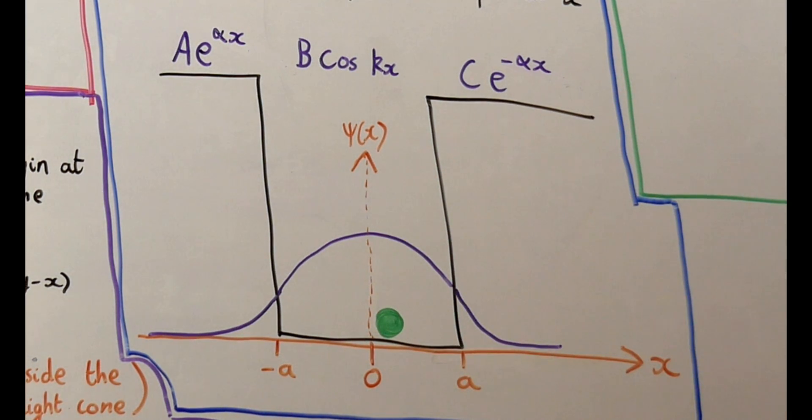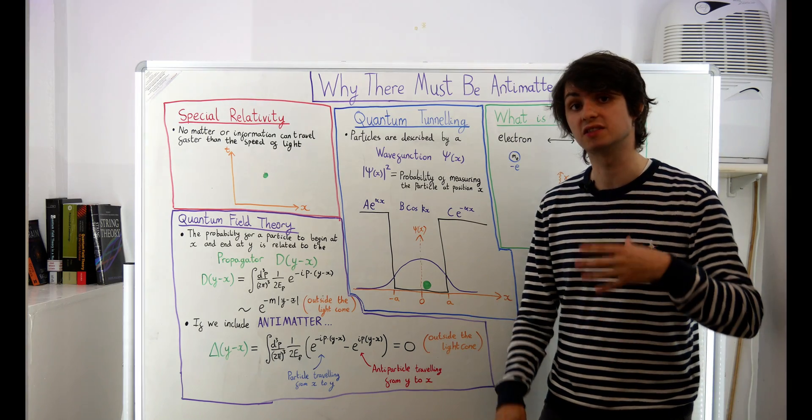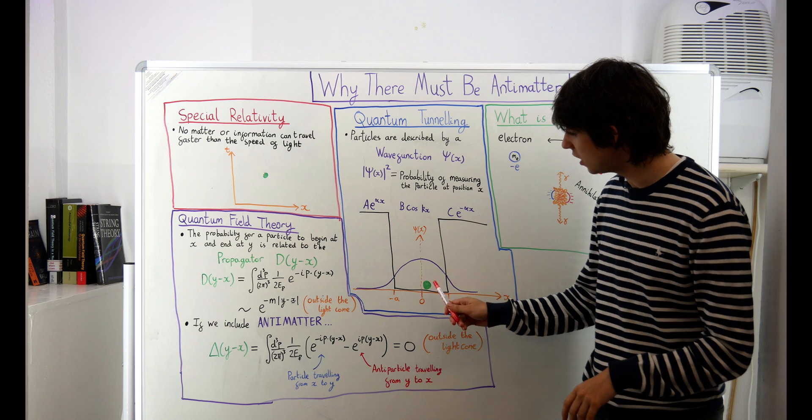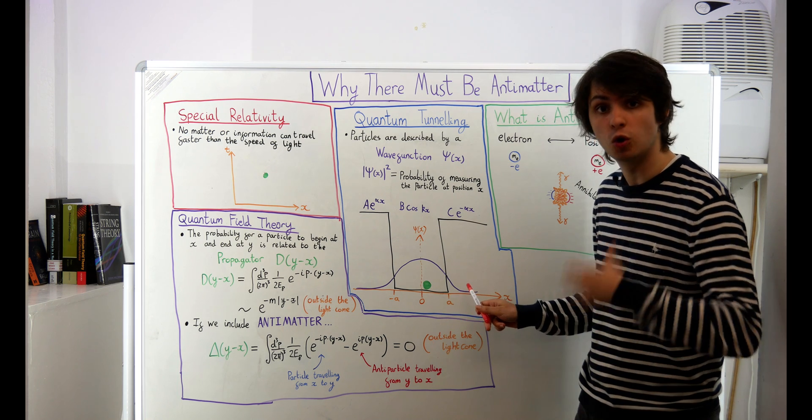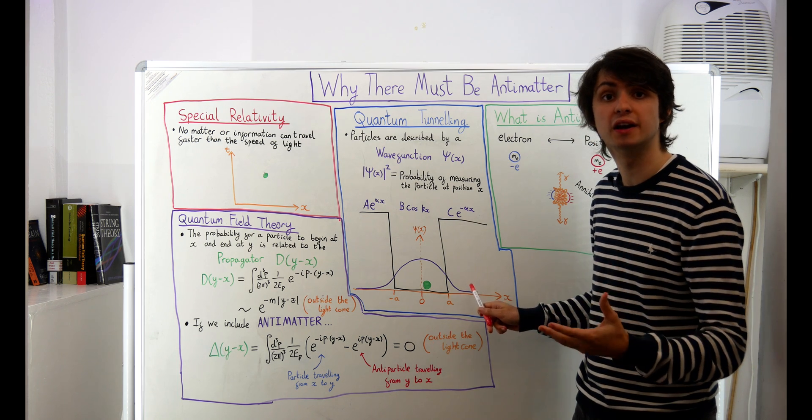But now notice what the wave function looks like in a region just outside the well. Outside the well the wave function decays exponentially. So there's a very small chance to find the particle outside the well but small doesn't mean zero. What this tells us is that there is a chance that the particle can escape or tunnel outside of the well.